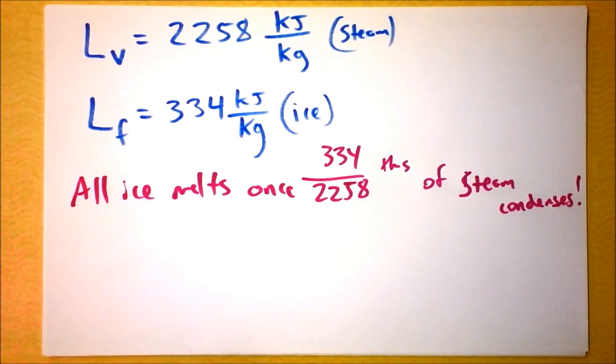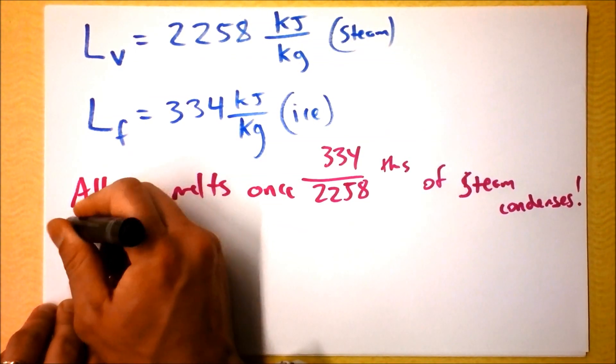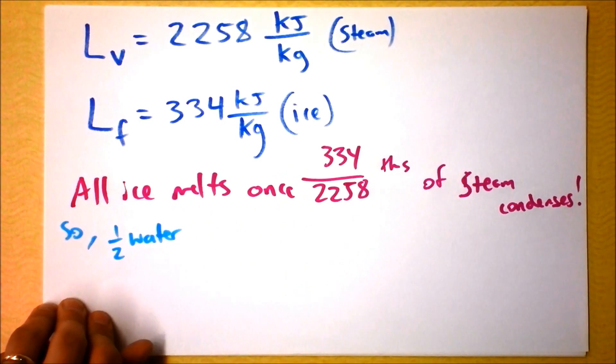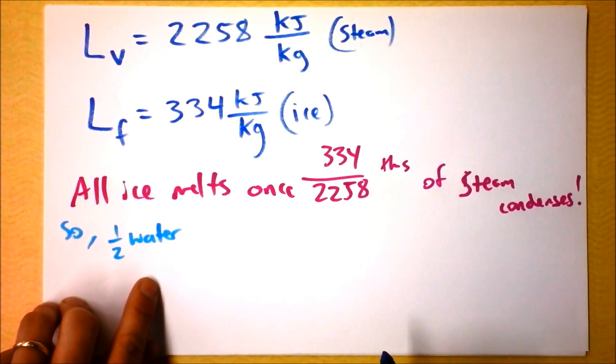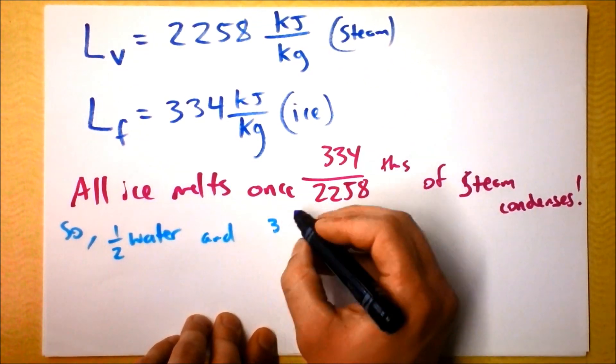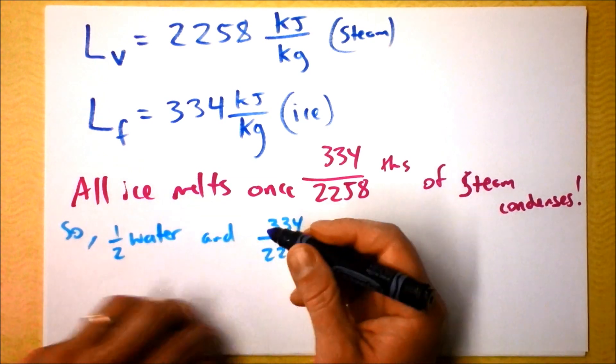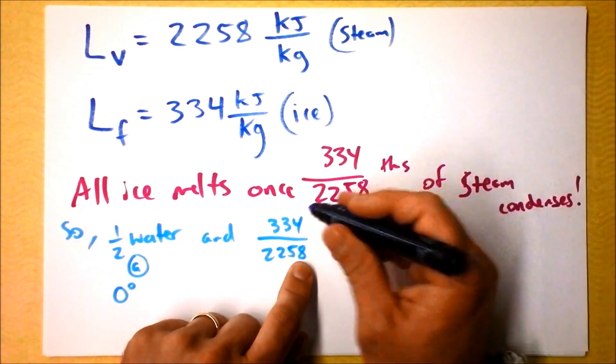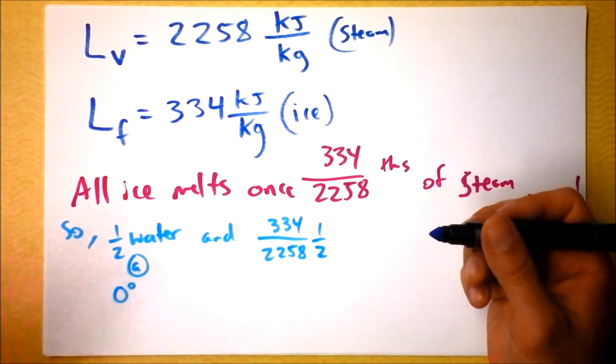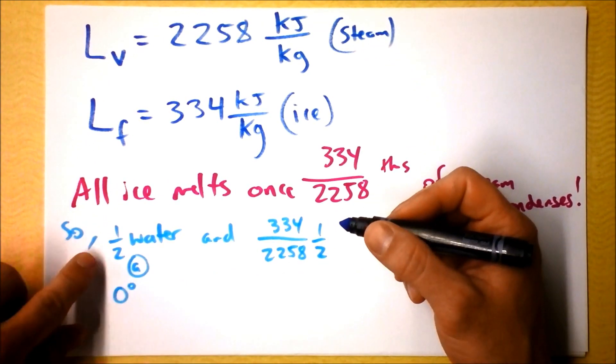So now we've got water, and now I'm not going to say that we've gotten a certain number of kilograms of this business, but I am going to say, so now we have, so we have one half water. This is going to be a little annoying. We've got one half water, and we've got 334 over 2258. This water is at zero Celsius, and this is times a half, right? Because that was half of our original mass. This is not the best way to do it. Well, let's just forge on. Sorry, it's not super clear. Here's what I'm doing. I'm saying that the...